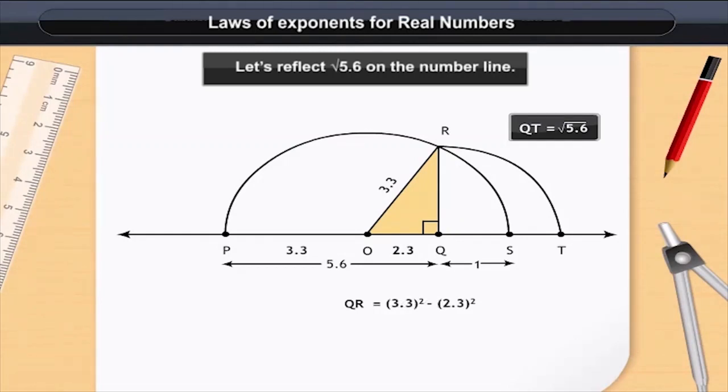Finally, when we simplify it, we get root 5.6 which is QR. You remember when making the arc QR is equal to QT. Thus, we have proved the construction.